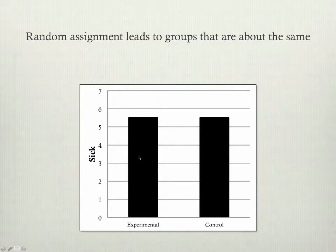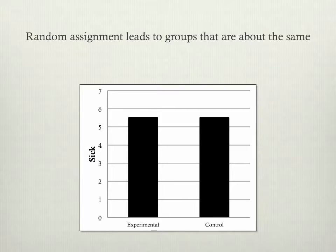To repeat what I was talking about a moment ago and make it a bit clearer: the idea is not just that random assignment leads the groups to be about the same on one thing, but it tends to make them the same on every characteristic they could possibly have.